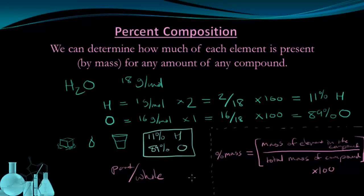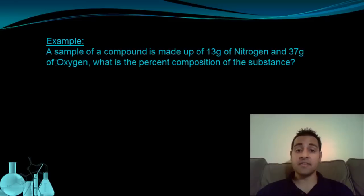So we can also work out the percent composition of a substance with experimental data, such as this. In this example, a sample of a compound is made up of 13 grams of nitrogen and 37 grams of oxygen. What is the percent composition of the substance? So I'm going to be looking for the percentage of the substance that is nitrogen and the percentage of the substance that is oxygen.